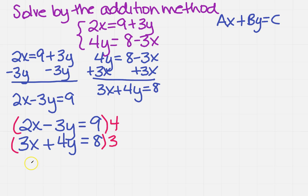And so that's going to give me 8x minus 12y equals 36. And I'm going to get 9x plus 12y equals 24.